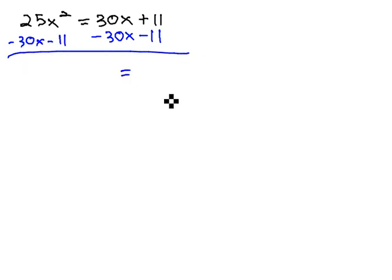And when we do that, the right side of the equation becomes 0 like we want it to. Now we have on the left side, 25x squared minus 30x minus 11.